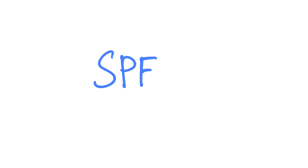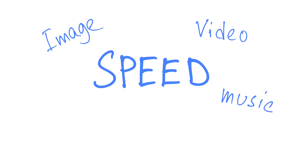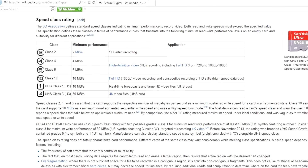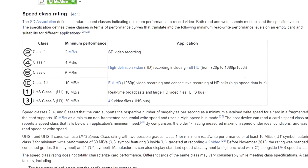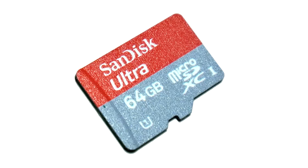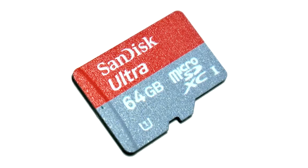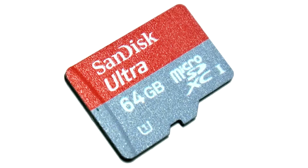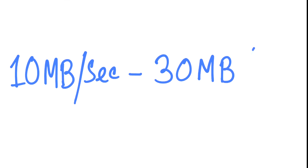Next, an important thing to consider is the speed of a memory card in order to achieve the best performance of the Galaxy Note 10.1 for capturing images or video, playing music, videos or games, and running apps. The class of a memory card indicates how quickly it can read or write. This is a quick chart referred from Wikipedia. The memory card I'm going to use here is the SanDisk Ultra 64GB micro SDXC UHS-1, which is ultra high speed.